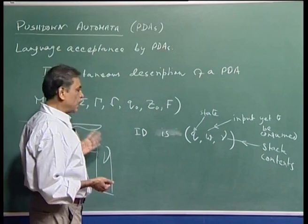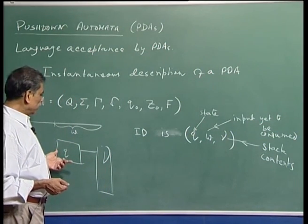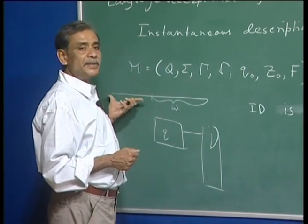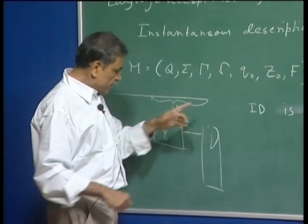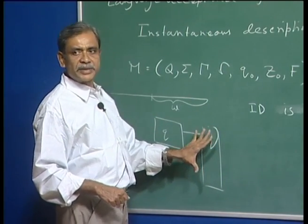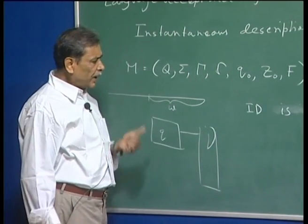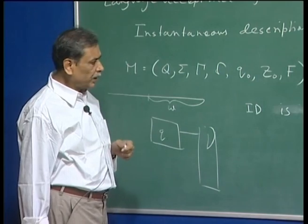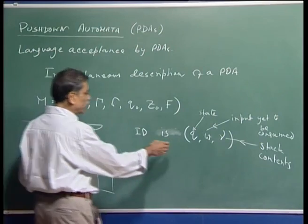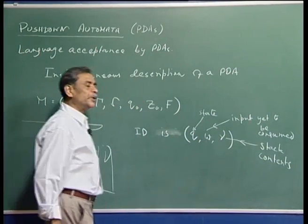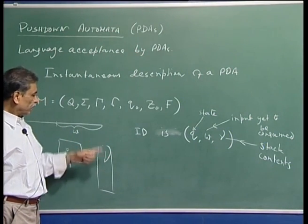Clearly, what happens to the PDA in the future does not depend on the symbols it had already seen or how it came to its current state or how the current contents of the stack arose. Once we have the ID, we have enough information to carry on. In fact, we can define a binary relation over the set of all IDs. The set of all IDs consists of tuples where the first component is a state, the second is a string over Σ, and the third is a string over the stack alphabet.